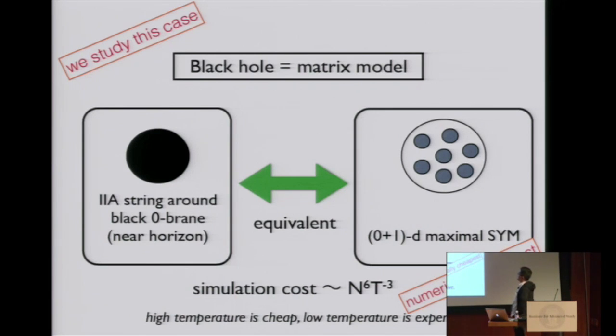Then gravity side is type IIA string around black zero-brane. In gauge-theory side, we just have matrix quantum mechanics, which is the same as matrix model of M-theory. Still, simulation cost increases when we take n, the size of gauge group, larger.